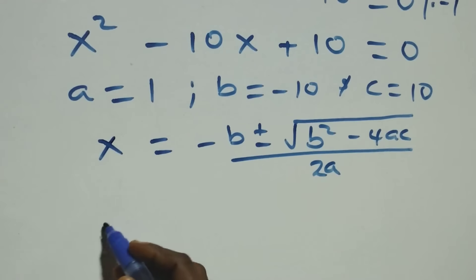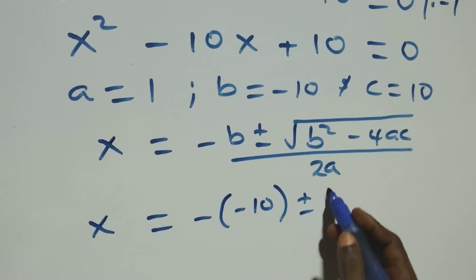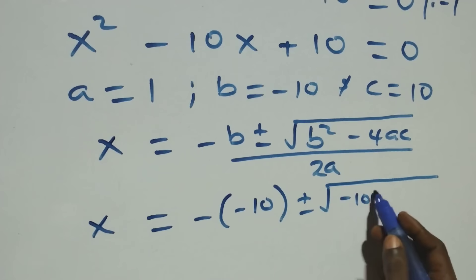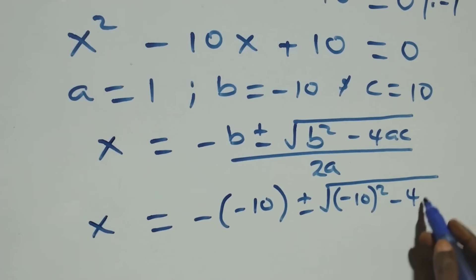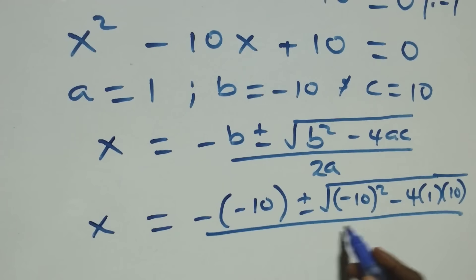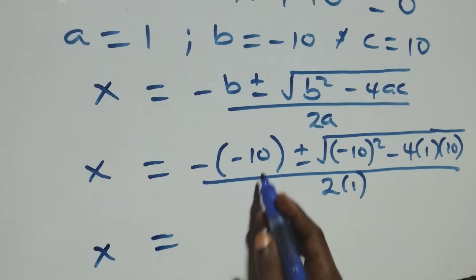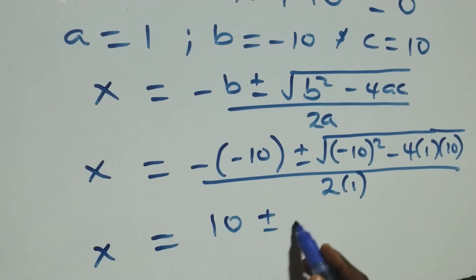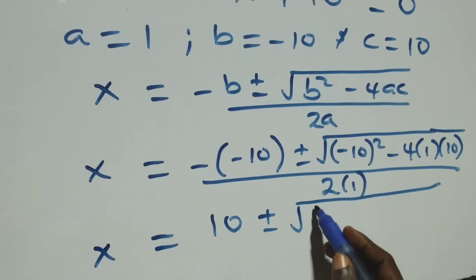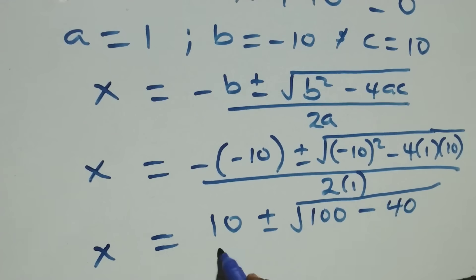Substituting in, we have x equals to minus (minus ten) plus or minus square root of (minus ten) squared minus four times one times ten, all over two times one. That is: x equals to ten plus or minus square root of one hundred minus forty, all over two.